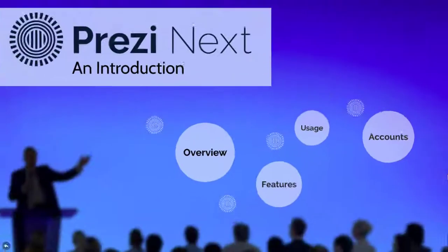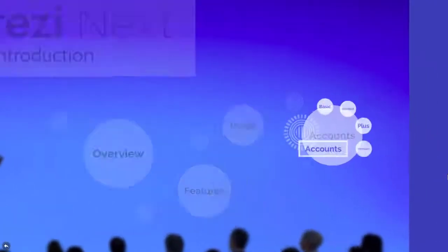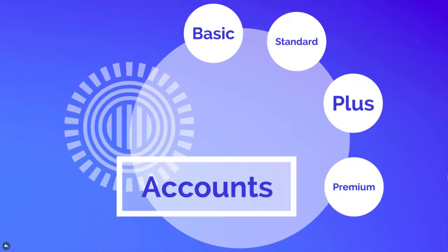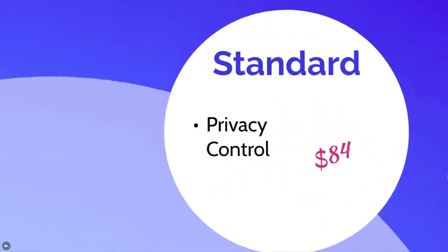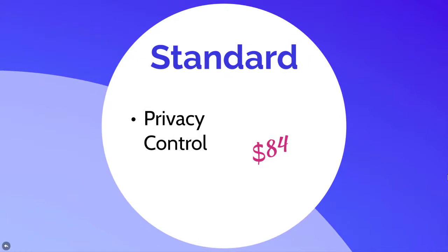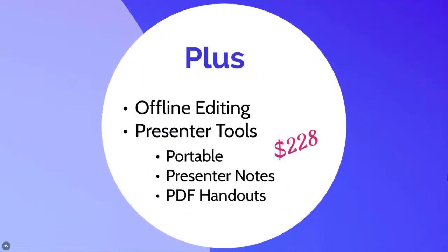Prezi Next has a tiered pricing structure with four account options. There's a freemium subscription that allows the user to create, save, share, and present their Prezi projects. All Prezis created on a basic account are available publicly for anyone to see. With a standard account, you add the ability to hide your projects from the public by paying an annual subscription fee. The next tier, PLUS, offers two important features: offline editing and presenter tools.